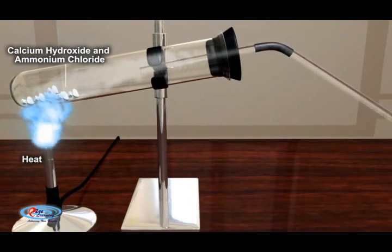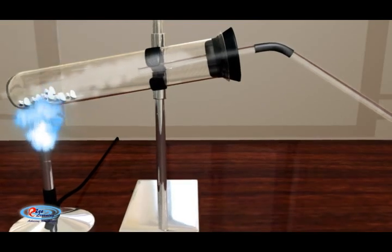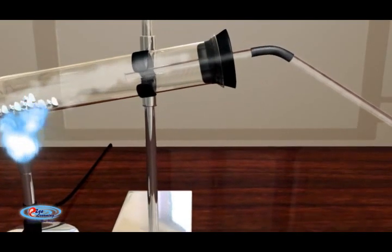In a small test tube, mix two spatulas of the ammonium chloride with two spatulas of the calcium hydroxide together. The two solids begin to react immediately on mixing. If we continue to heat the mixture...